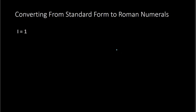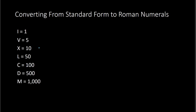Starting with the number one, a straight up line is the symbol for one. For five you have the letter V, the letter X for ten, the letter L means fifty, the letter C is one hundred, the letter D is five hundred, and the letter M is one thousand. Notice these are all capital letters — this is the key, so make sure you know and have these memorized.